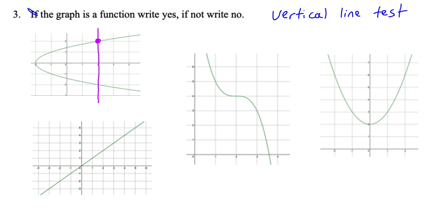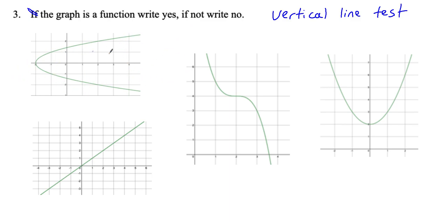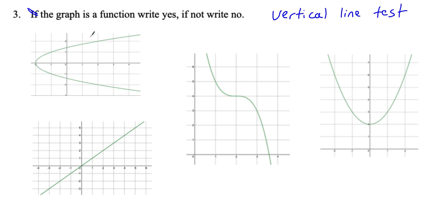Let me be clear: you can draw that vertical line wherever you want — here, here, or here. But if there's any place where a vertical line touches the graph at more than one point, it's not a function. So I draw a vertical line, and I see it touched the graph here and also here — at two points. So it's not a function.